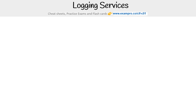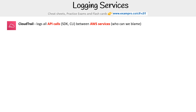Let's take a look at the logging services that we have available in AWS. The first one is CloudTrail, and this logs all API calls, whether it's SDK or the CLI. So if it's making a call to the API, it's going to get tracked between AWS services.